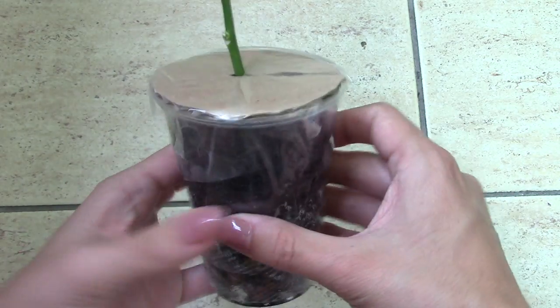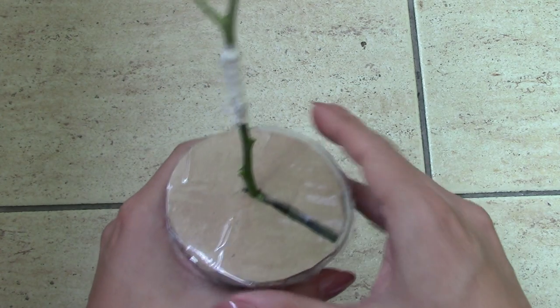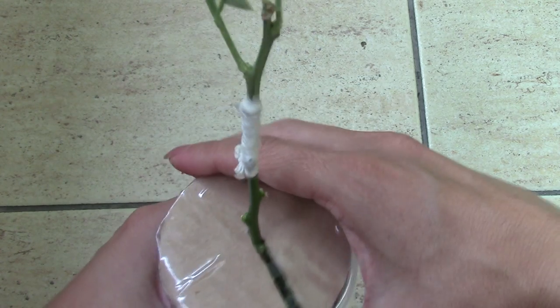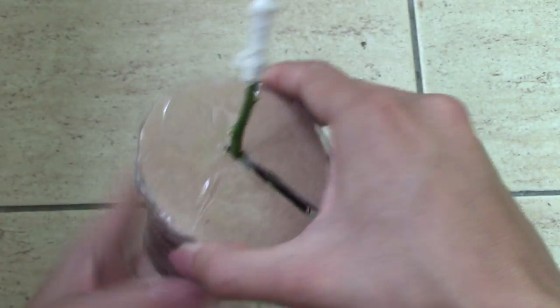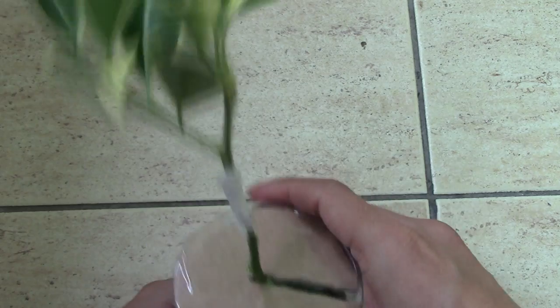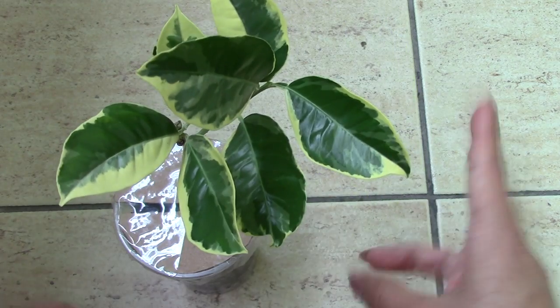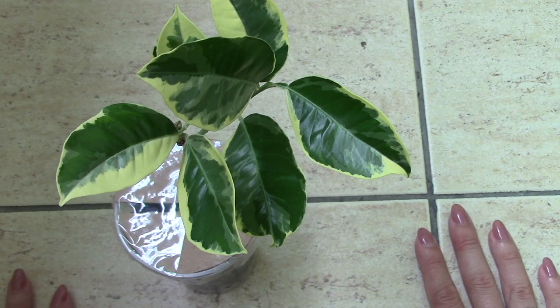Okay, the first part is done. As you can see, now our plant is fixed and the soil won't come out of the pot. Everything is good. And now let's move to the second part of our packaging.